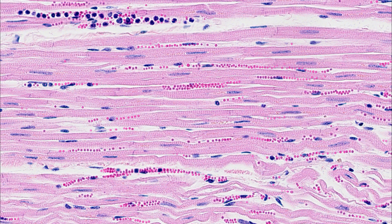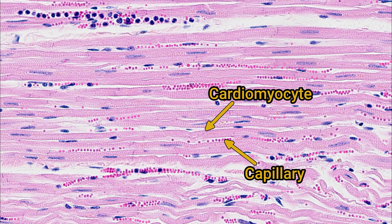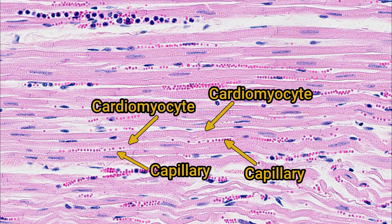Another notable feature of cardiac muscle is its rich vascularity — there are loads of capillaries. You'll often see them alternating with cardiomyocytes: one cardiomyocyte followed by a capillary, then another cardiomyocyte, then another capillary, and so on. This close contact with blood vessels ensures that the muscle cells receive the oxygen they need to maintain repeated contractions and keep blood pumping around the body.